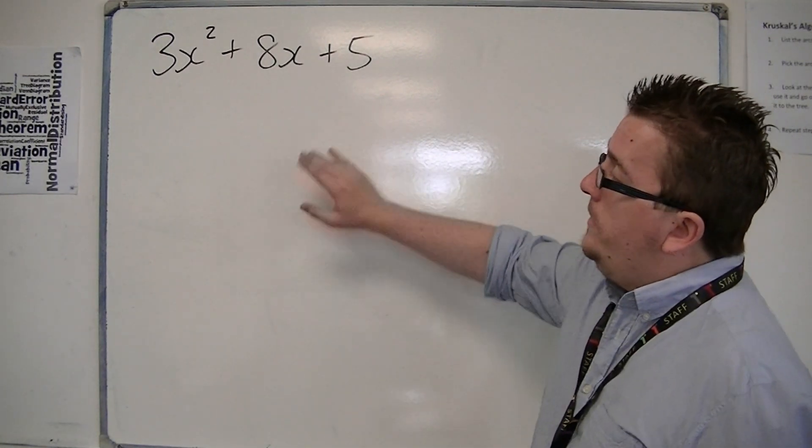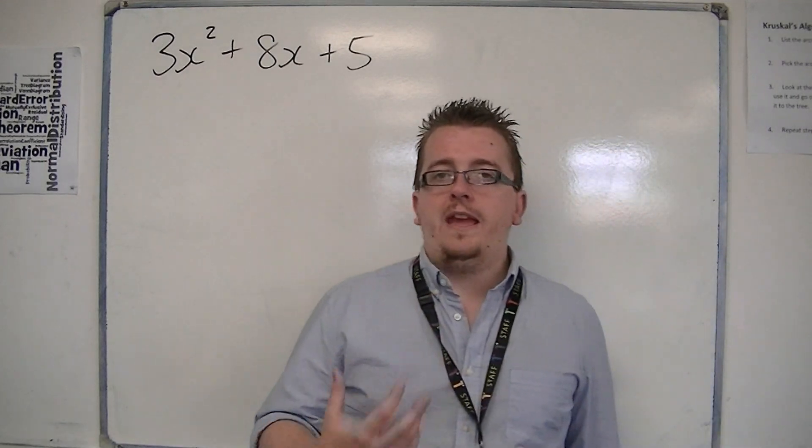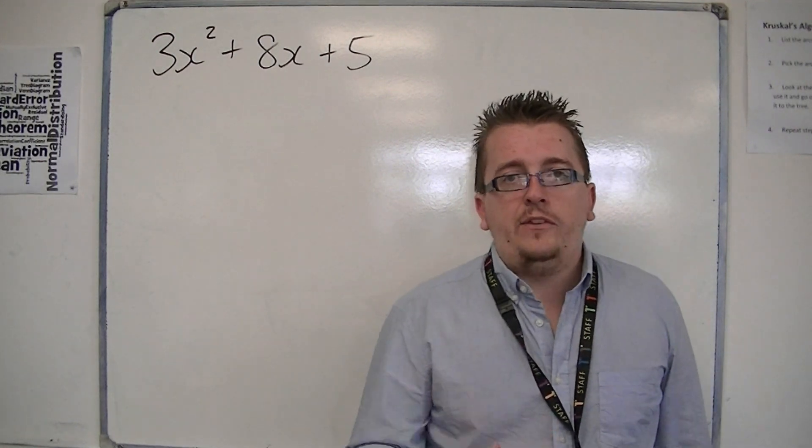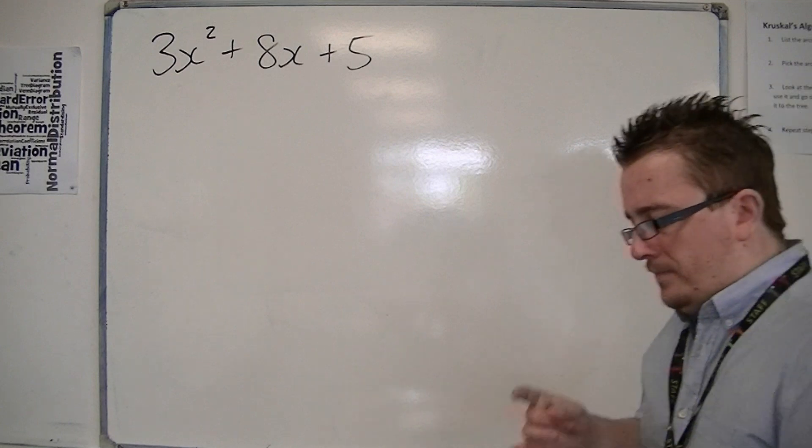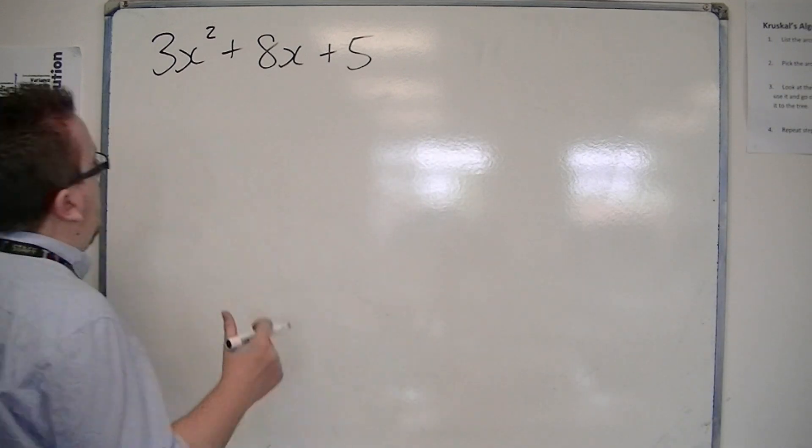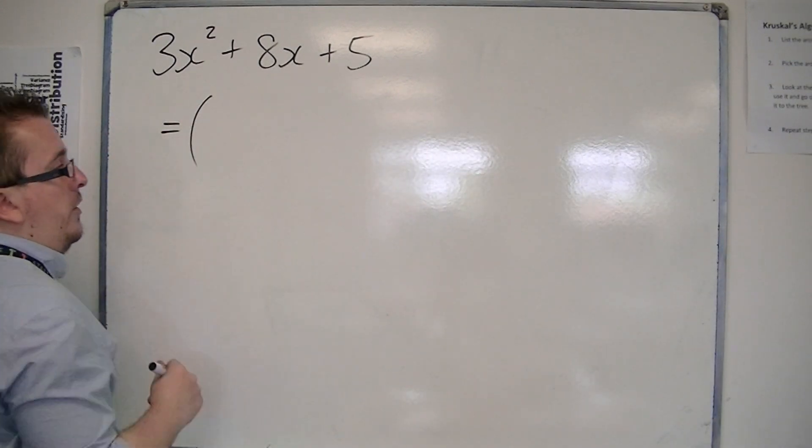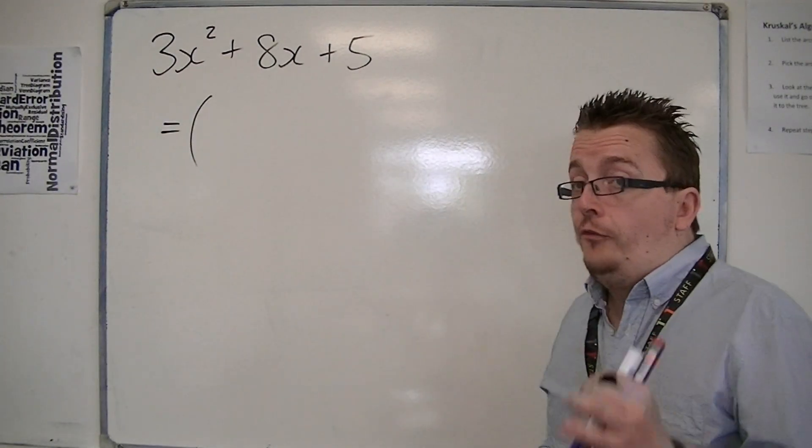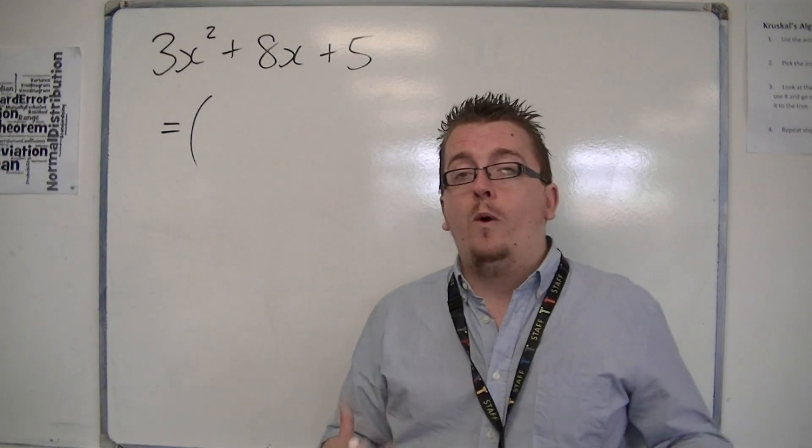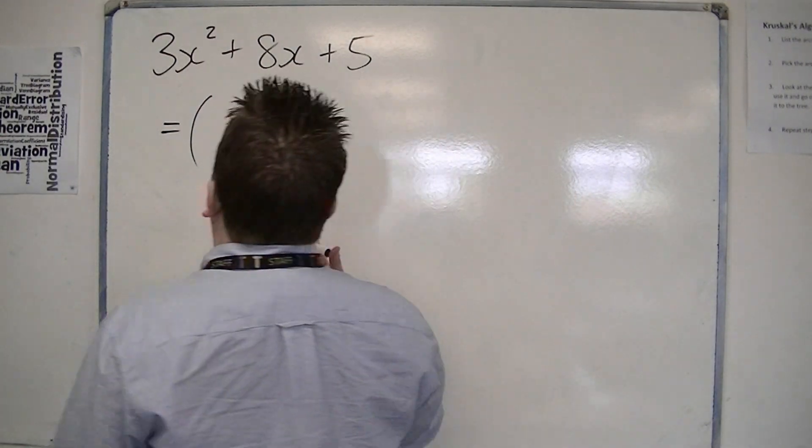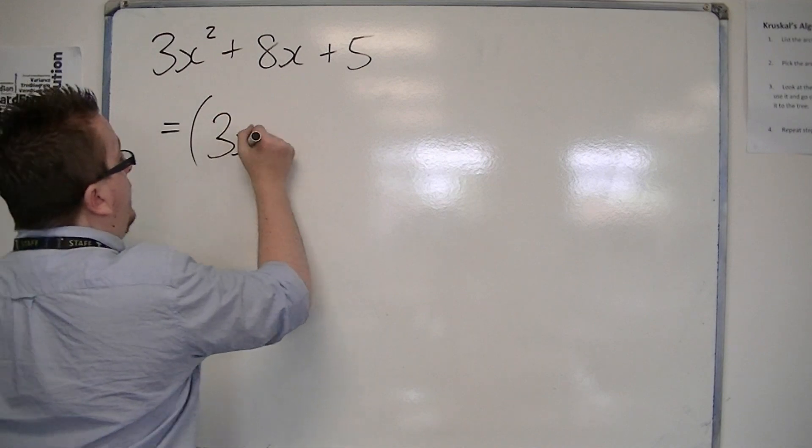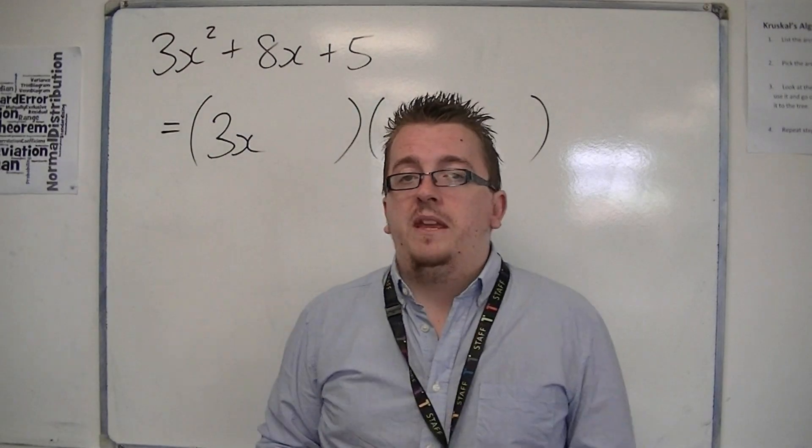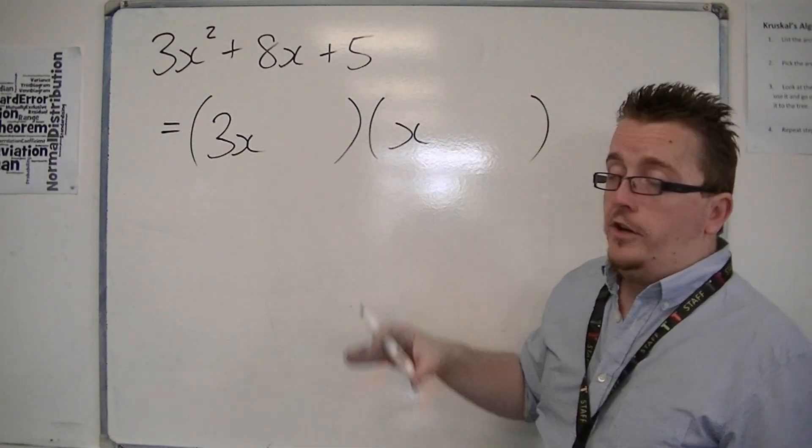But in this case, when the number in front of the x squared is prime, it makes it a little bit easier for us. And the reason why it makes it easier for us is because there is only one way of making the 3x squared. If it was 5x squared, there is only one way of making 5x squared. So for the 3x squared, it would be 3x multiplied by an x. If it was the 5x squared, it would be 5x times x.